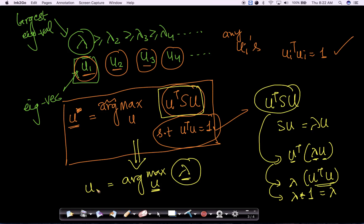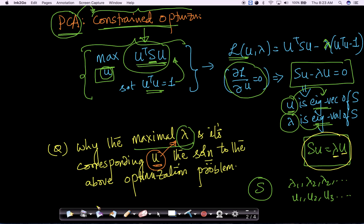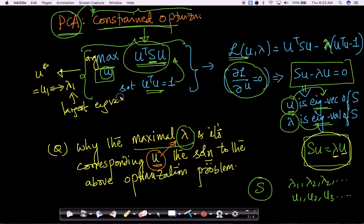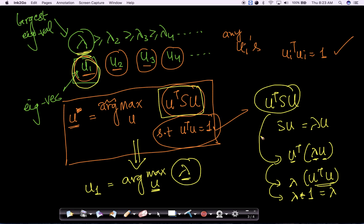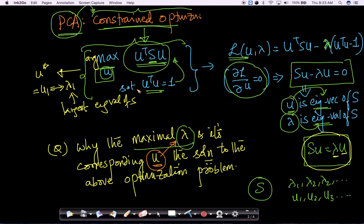Therefore the solution is U1, because λ1 is the largest or maximal eigenvalue. This is literally a two-step proof. The reason I think it was missed in the original content is because it seems so obvious, but it is actually a very good question. In summary, U* = U1, corresponding to λ1, the largest eigenvalue of S. I appreciate the student who asked this, as they carefully thought through each step that many of us, including myself, had glossed over.